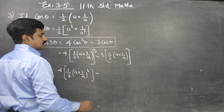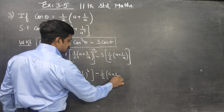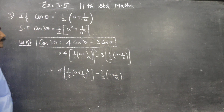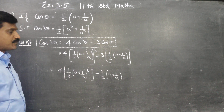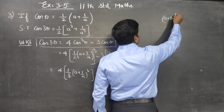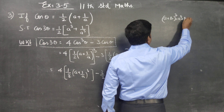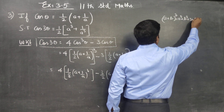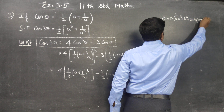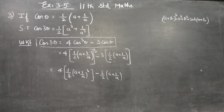We apply the (a + b)³ expansion formula: (a + b)³ = a³ + b³ + 3ab(a + b). Here a = a and b = 1/a.